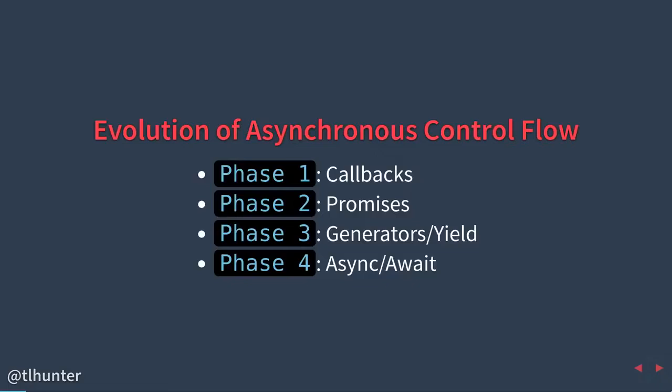We have four phases to consider. The first phase is callbacks — raise your hand if you've used callbacks. We've all used callbacks, this is Node. Raise your hand if you've used promises, phase two. A little less, but definitely people are using it. Raise your hand if you use generators. Sad trombone. Not many people confidently understand them.